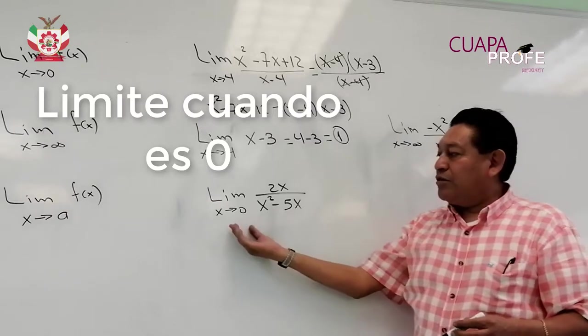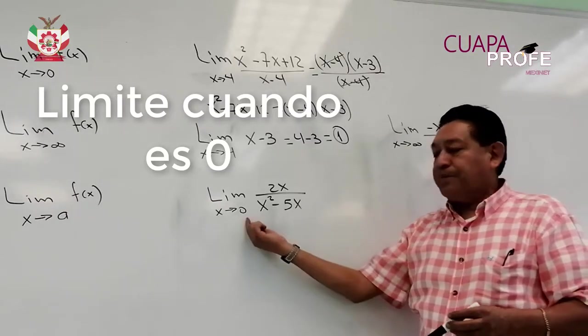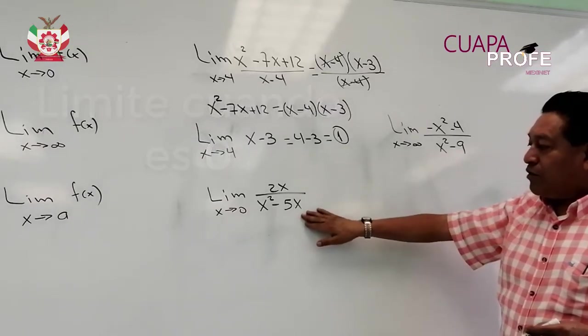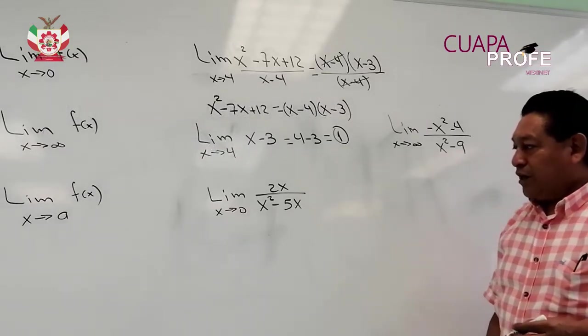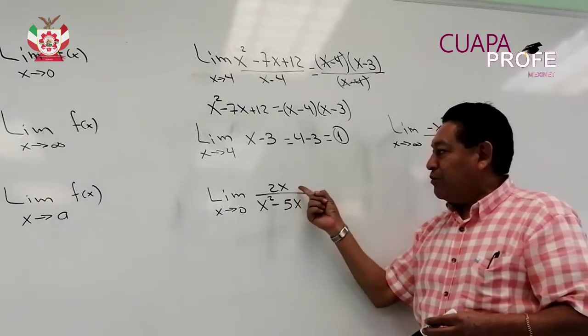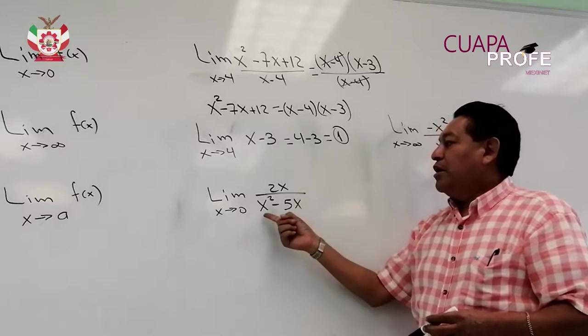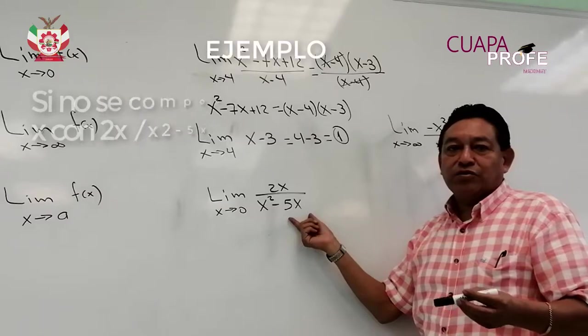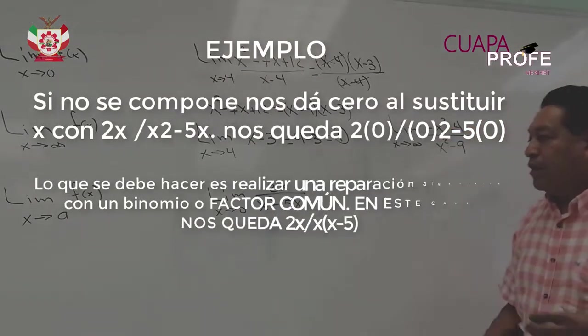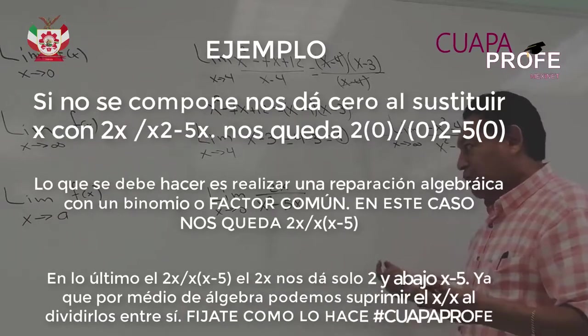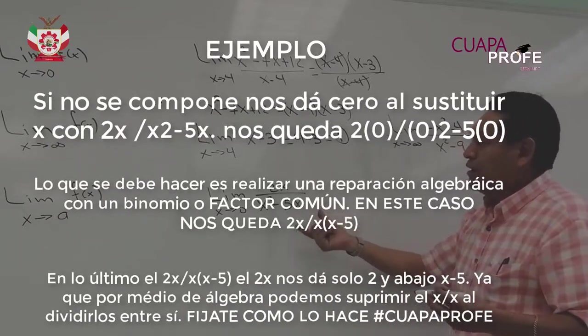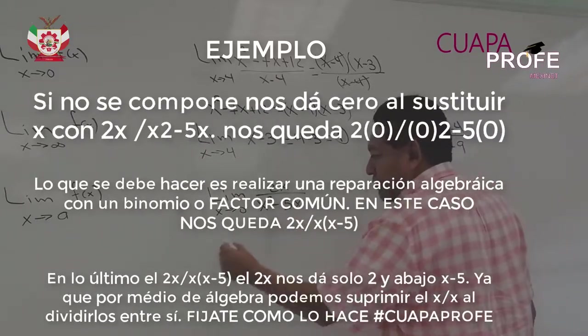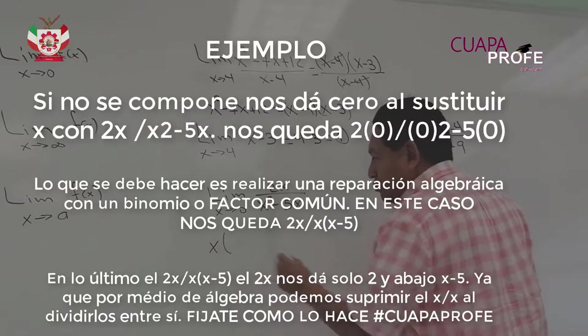Otro límite que es característico es cuando x tiende a 0. Aquí tenemos un ejemplo: el límite de la función 2x sobre x cuadrada menos 5x. Si nosotros sustituimos directamente, pues obviamente tendremos 2 por 0, me da 0, y en el denominador tendremos 0 menos 0. Al final, 0 sobre 0 es una indeterminación. Por lo tanto, lo que podemos hacer nuevamente es observar y ver si podemos transformar esta expresión. Concretamente, en el denominador podemos obtener una factorización.